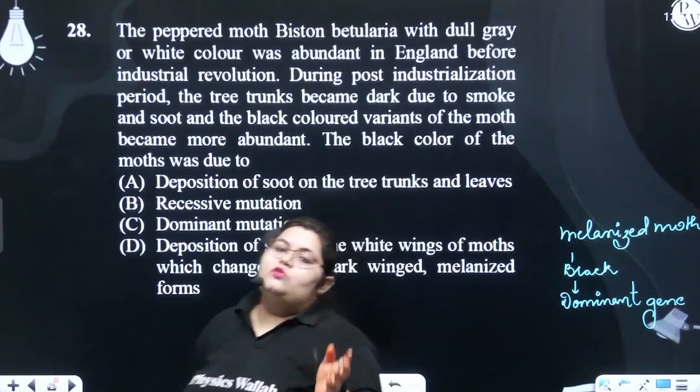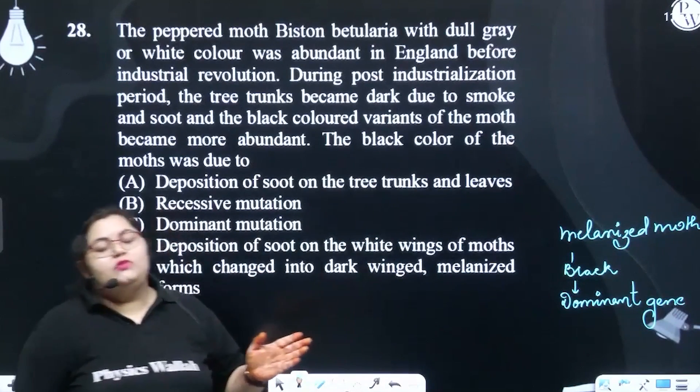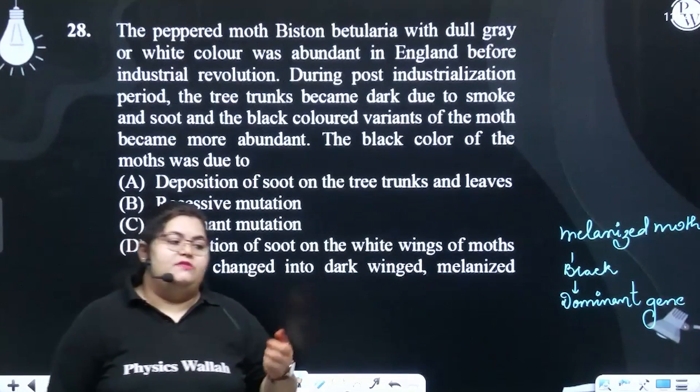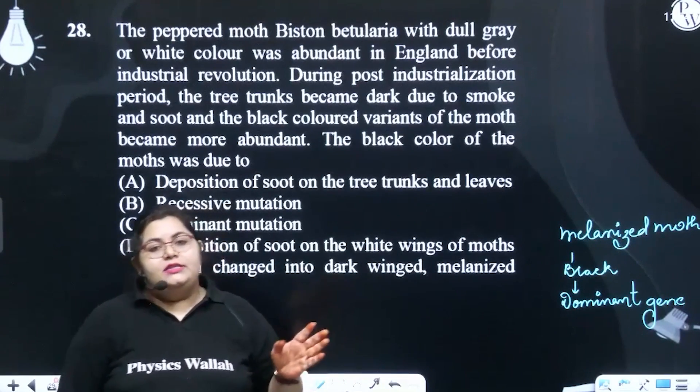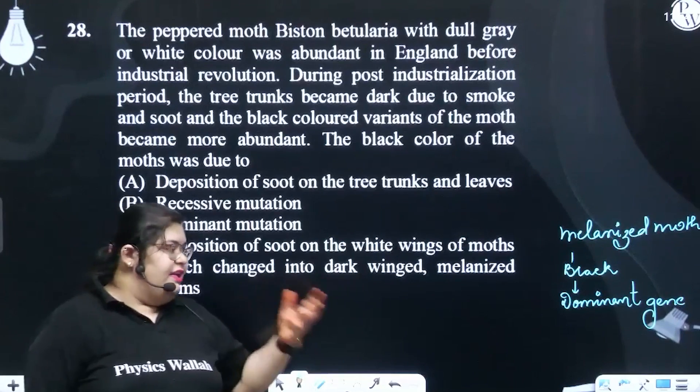Before industrialization, there was no advantage to being black. The white color was suited to support the environmental conditions — white moths matched the white tree trunks. That's why the black form didn't get an advantage through natural selection.